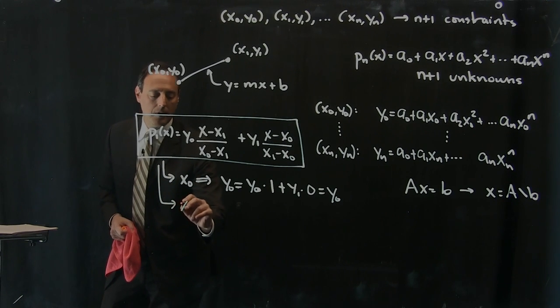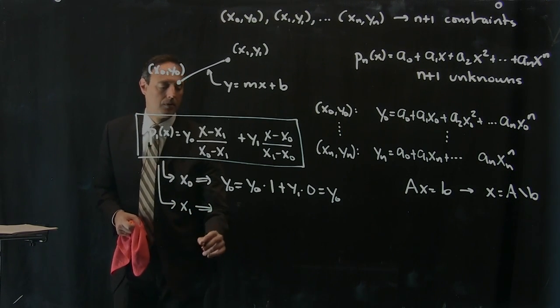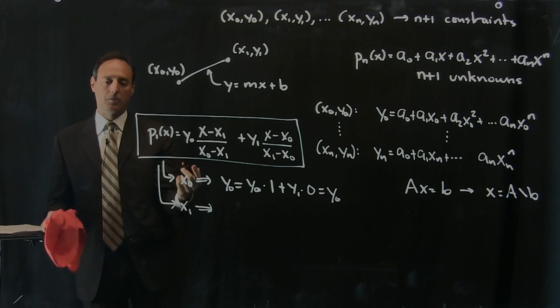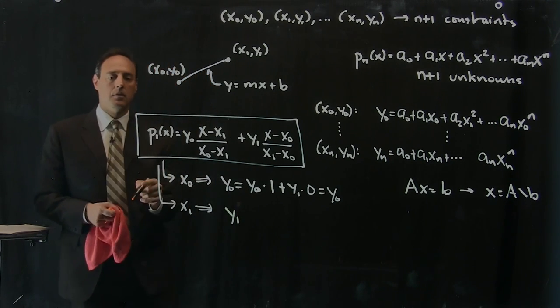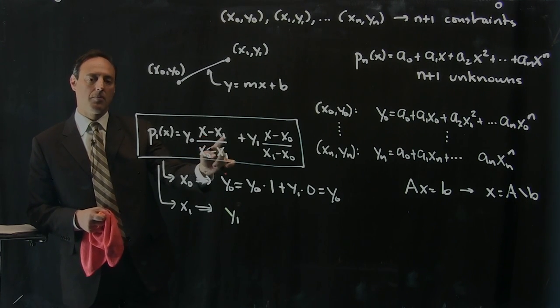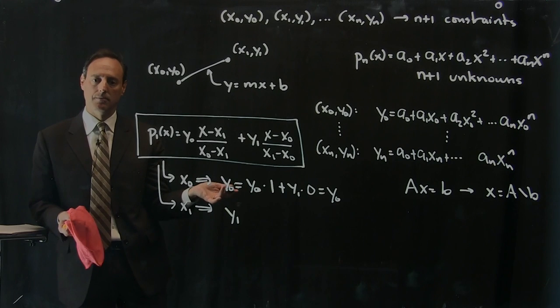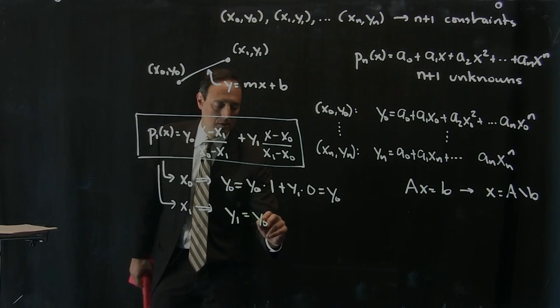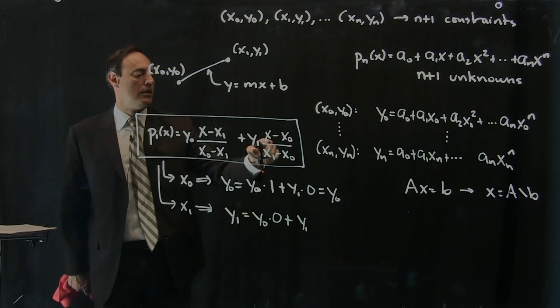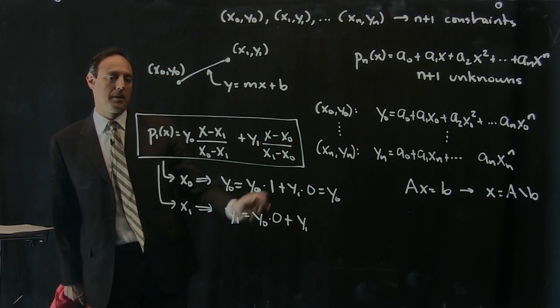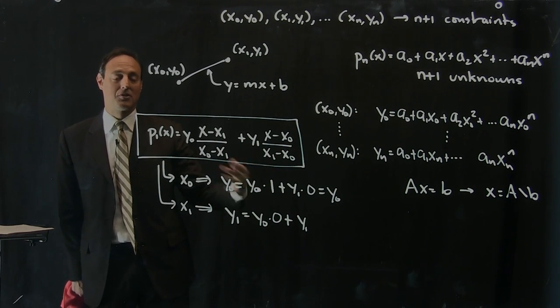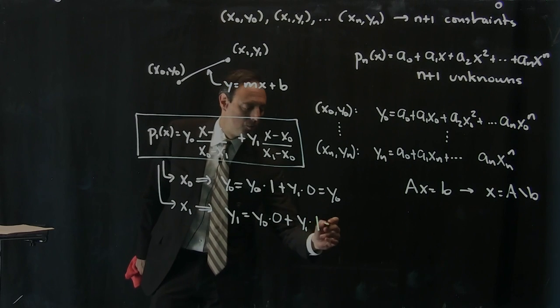And if I put in x1, then what happens? Well, if I put in x1 here, p1 at x1 is y1. Now what happens to the rest of the terms? I get y0 times, I have here, x1 minus x1 is 0. So I get y0 times 0 plus y1 times, here put in x1, I get x1 minus x0, x1 minus x0, x1 minus x0 over x1 minus x0 is just 1. So x1 is y1.